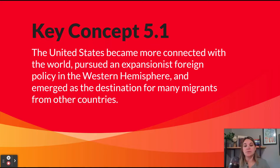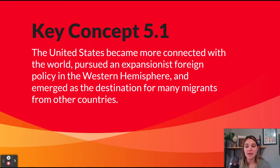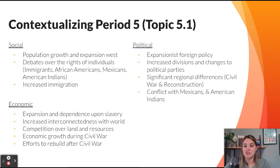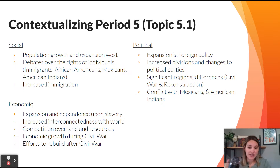The first key concept: the United States became more connected with the world, pursued an expansionist foreign policy in the Western Hemisphere, and emerged as a destination for many migrants. We're looking at growth and expansion, especially with territory. Before Period 5, there's already a lot of population growth and westward expansion, debates over the rights of groups in these areas, and a rise of immigration that will continue to increase throughout Period 5.